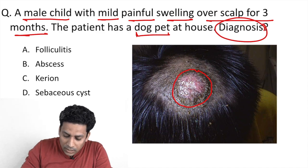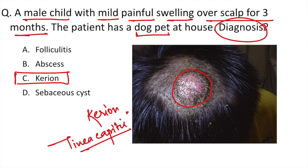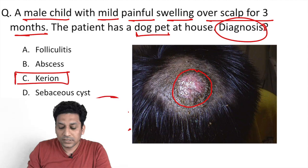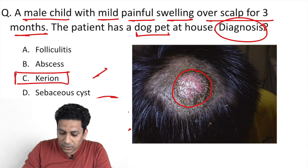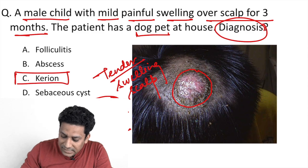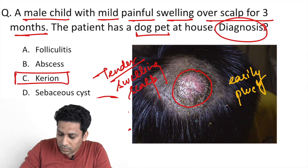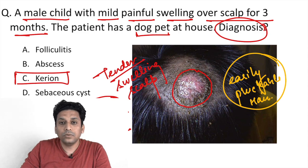If you look at this image, this looks like a kerion, and one of the options was kerion. As you all know, kerion is a type of tinea capitis, that is a fungal or dermatophytic infection. In this type, the patient generally presents with tender swelling over the scalp with easily pluckable hair follicles.